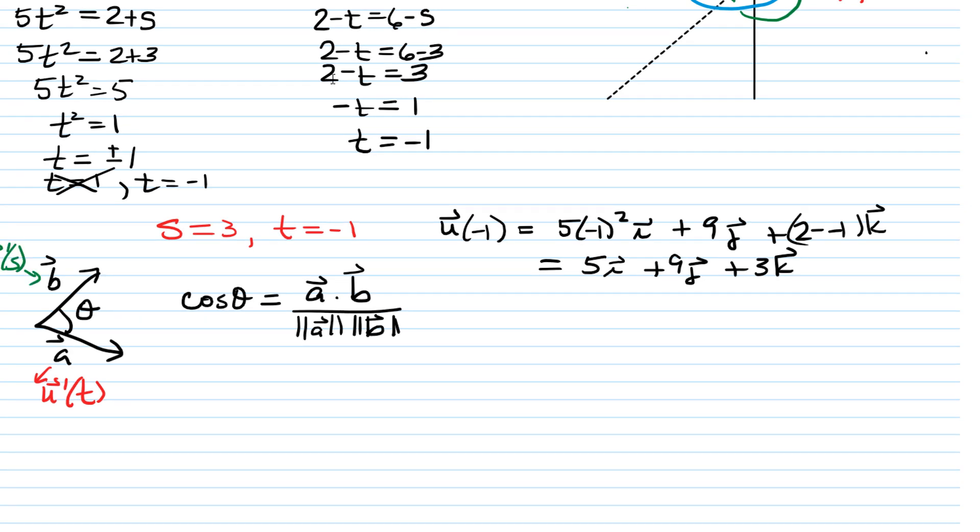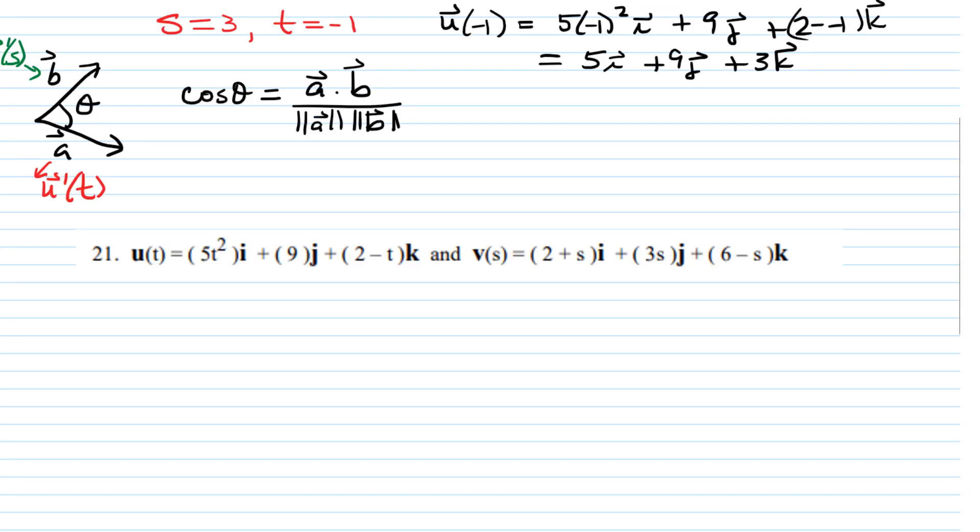But we're going to actually be finding not the angle between a and b, but the angle between u prime of t and v prime of s. Let's find, we have to find the derivatives first. So the derivative of u, we go component by component, derivative of 5t squared is 10t. And then we have derivative of 9 is 0. And then derivative of 2 minus t is negative 1. And then for v prime of s, we have derivative of 2 plus s is just 1. And then derivative of 3s is 3. And then derivative of 6 minus s is negative 1.